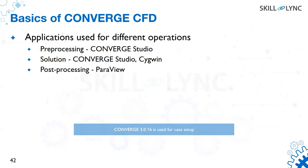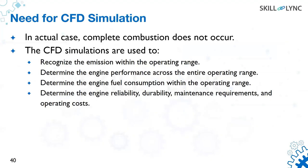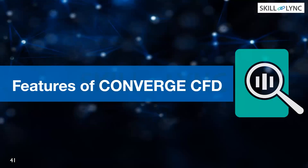We have to reduce emissions — from BS2 emission norms we now have BS6. Every time emission norms are renewed, emissions are limited to a greater extent. This is done using CFD simulations, which are cost-effective and give good results. That is why CFD simulations are required.